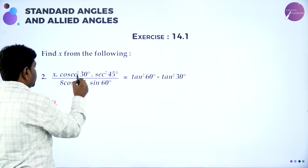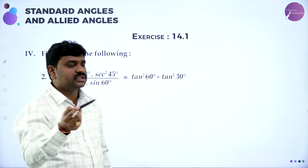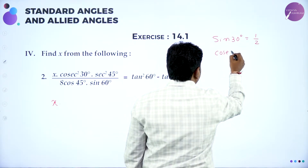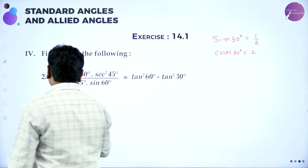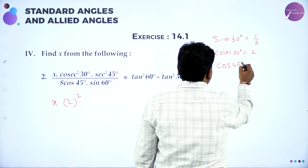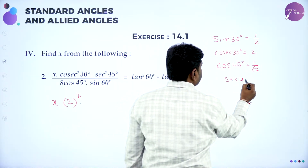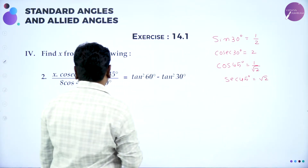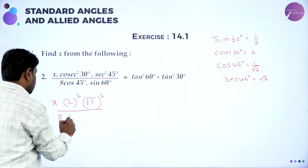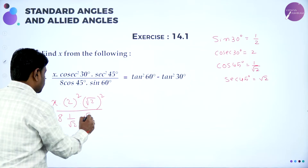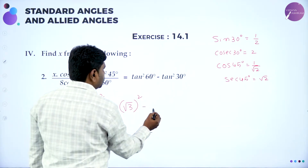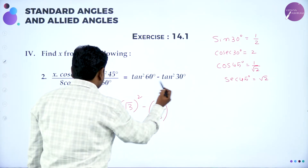x is unknown. Cosec² 30: sin 30 = 1/2, so cosec 30 = 2, giving cosec² 30 = 2². Sec 45: cos 45 = 1/√2, so sec 45 = √2, giving sec² 45 = (√2)². Divided by 8 · cos 45 = 1/√2 · sin 60 = √3/2. Equal to tan² 60: tan 60 = √3, so (√3)². Minus tan² 30: tan 30 = 1/√3, so (1/√3)².